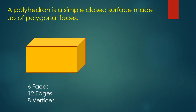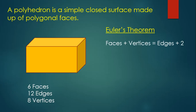Now if we extend this notion of faces, edges, and vertices a little bit, we can look at something called Euler's Theorem. Euler's Theorem says that for any polyhedron, the number of faces plus the number of vertices will always equal the number of edges plus two. For example, for this rectangular prism, the number of faces is 6 and the number of vertices is 8, so 6 plus 8 equals the number of edges, which is 12, plus 2. 14 does equal 14, so we can verify Euler's Theorem for this rectangular prism.